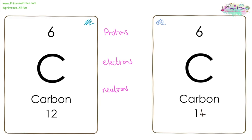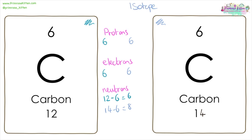Here we have two isotopes of carbon. You can see they have the same atomic number — six — but different mass numbers, which means each of them is going to have six protons. They are each going to have six electrons, but one has 12 minus 6 = six neutrons, and one has 14 minus 6 = eight neutrons. An isotope is an atom that has a different number of neutrons.